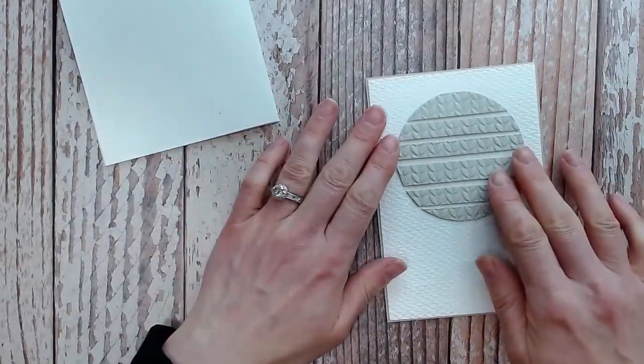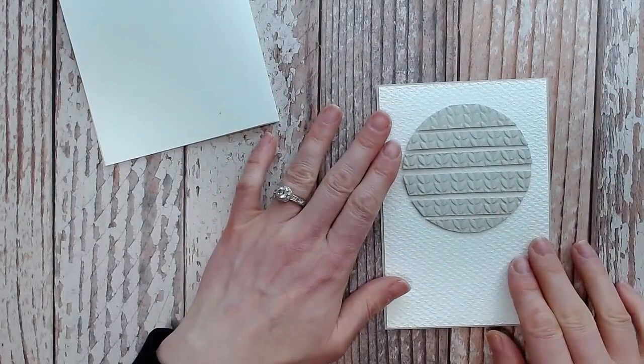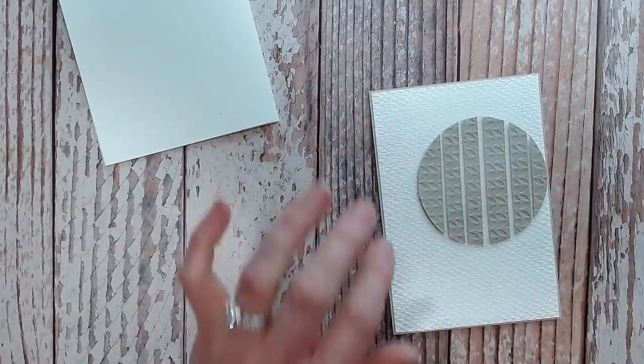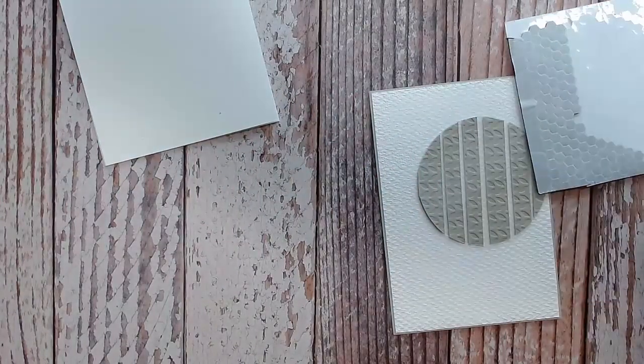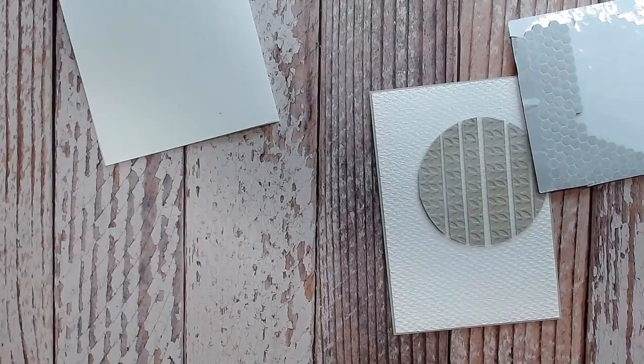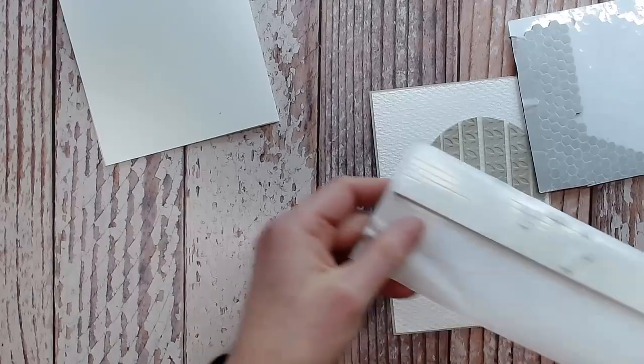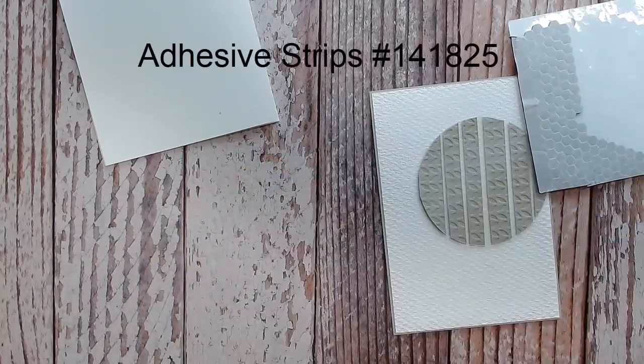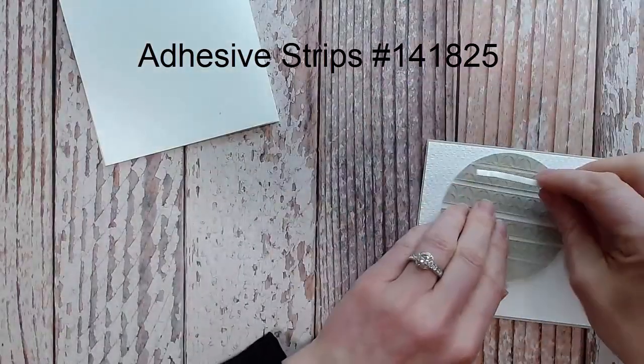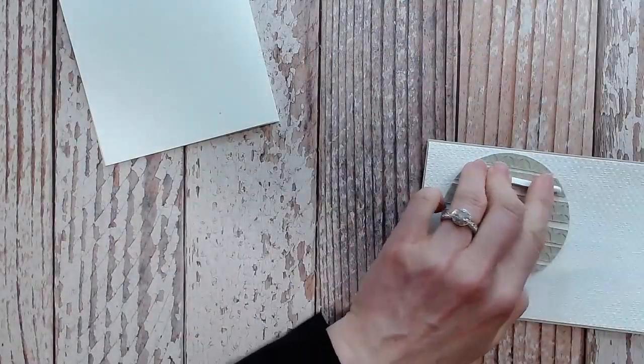From here we're going to want to put it onto our front piece and this is Sahara Sand too. This is where your mini dimensionals are very useful because you've got these little thin strips, or you could use the adhesive strips which is what I'm going to use for the video and these are just really quick and easy.